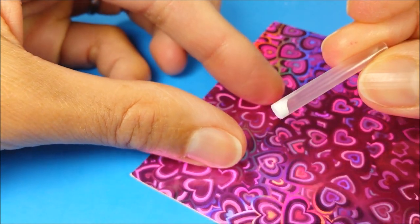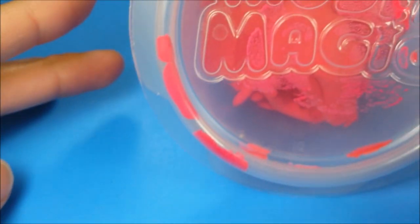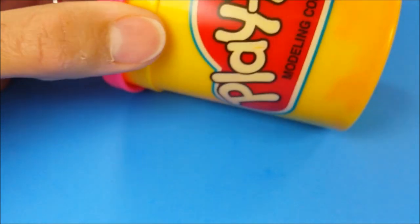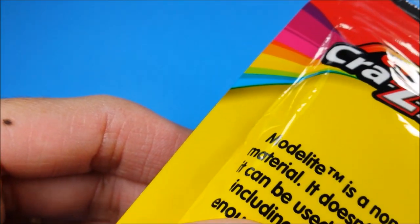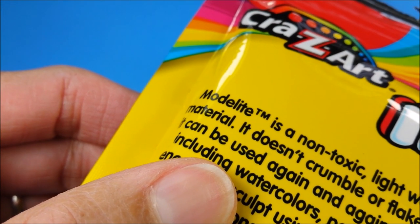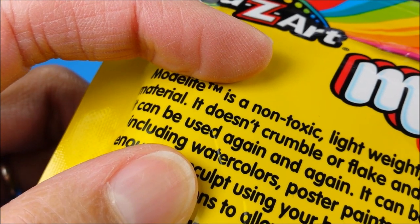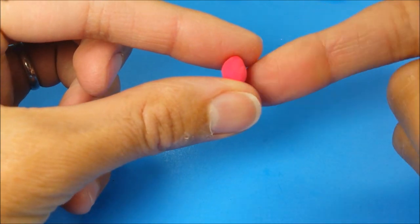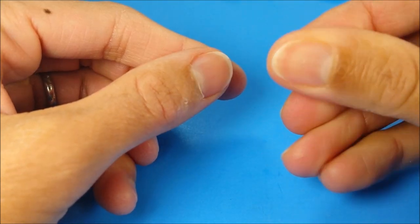For the lid, I'm using Model Magic, which is non-toxic. You could also use Play-Doh. If you're going to eat these little candies, just make sure that whatever you use is non-toxic. You won't need much, and I'm just rolling it out.